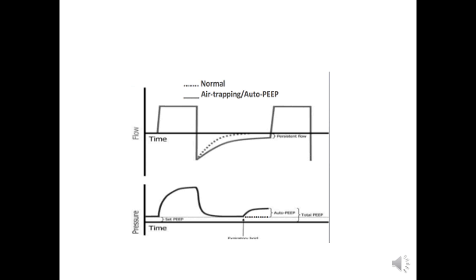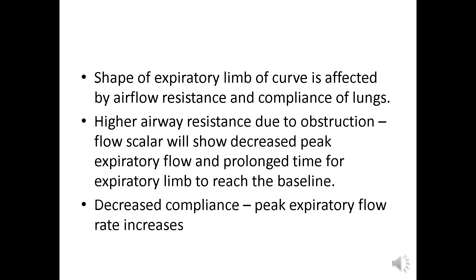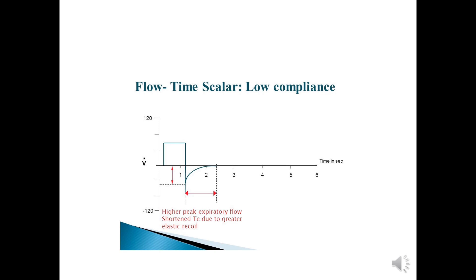Below, the pressure-time scalar shows that after an end expiratory hold we can determine the auto-PEEP. The shape of the expiratory limb of the flow-time curve is affected by airway resistance and lung compliance. Higher airway resistance due to bronchospasm, mucus plug, or other obstruction causes decreased peak expiratory flow and prolonged time for the expiratory limb to reach baseline. In conditions with decreased compliance, the peak expiratory flow rate increases.